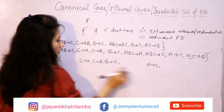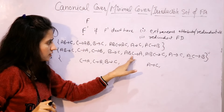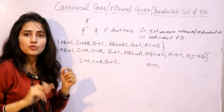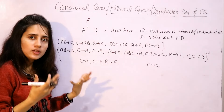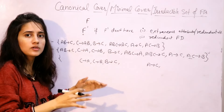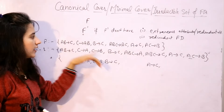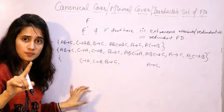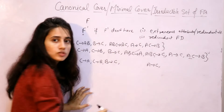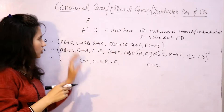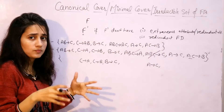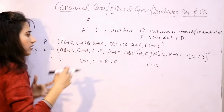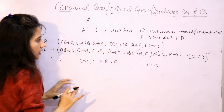Here, ABC → A — this is a trivial functional dependency, because A appears on both sides. We are not supposed to write trivial functional dependencies because by default they exist. Similarly, ABC → C is also a trivial functional dependency. So we can directly discard these. The remaining functional dependencies after discarding trivial ones are what we carry forward.